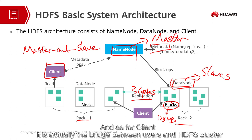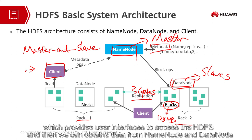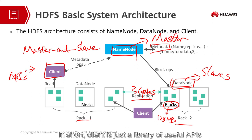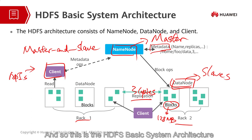As for the client, it is actually the bridge between users and the HDFS cluster, which provides user interfaces to access HDFS. We can obtain data from the name node and data node, and the client returns the data to us. In short, the client is just a library of useful APIs. This is the HDFS basic system architecture.